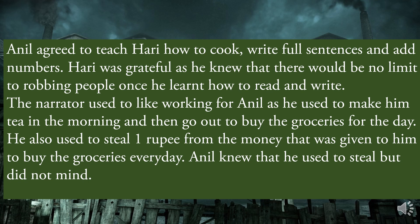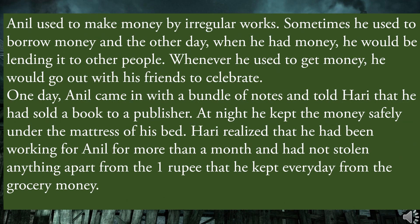Harry was grateful as he knew that there would be no limit to robbing people once he learned how to read and write. The narrator used to like working for Anil — he made tea in the morning, then went out to buy groceries for the day. He also used to steal 1 rupee from the money given to him for groceries every day. Anil knew that he used to steal but did not mind. Anil used to make money by irregular works — sometimes he borrowed money, and other days when he had money he would lend it to other people. Whenever he got money he would go out with his friends to celebrate. One day Anil came in with a bundle of notes and told Hari that he had sold a book to a publisher. At night he kept the money safely under the mattress of his bed.